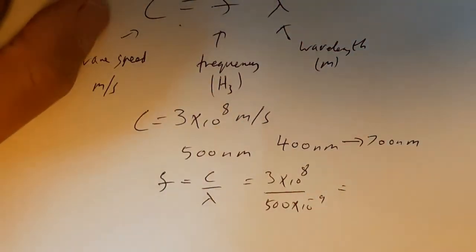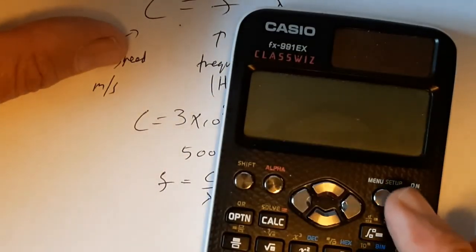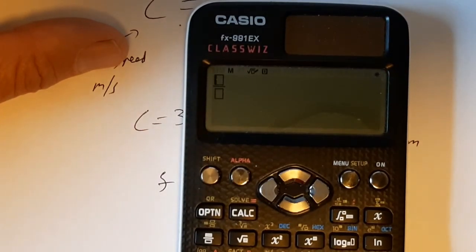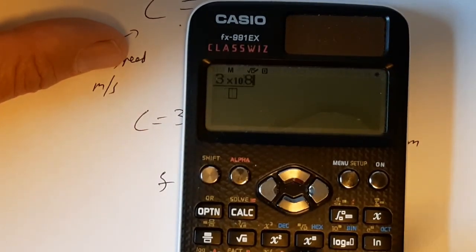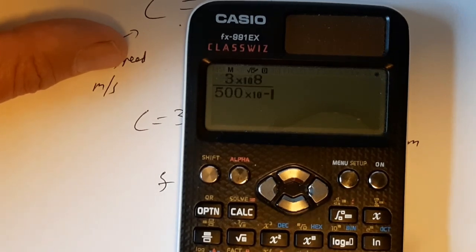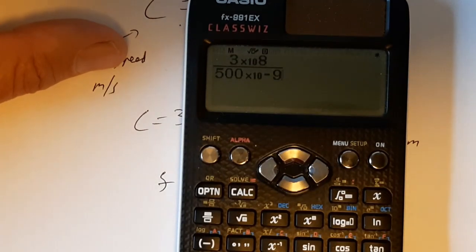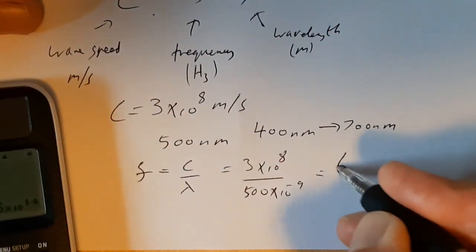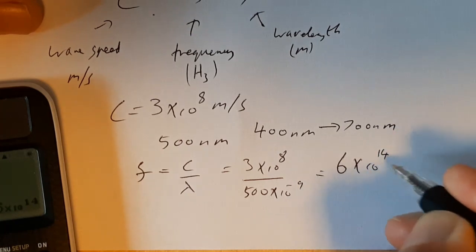So just stick that in the calculator. Can be quite a useful opportunity just to remind you to use this fraction button here. And the power of 10 button down there. So on the top we had 3x8. On the bottom we've got 500x minus 9. Times 10 to the power. And that gives us 6 times 10 to the 14 hertz.